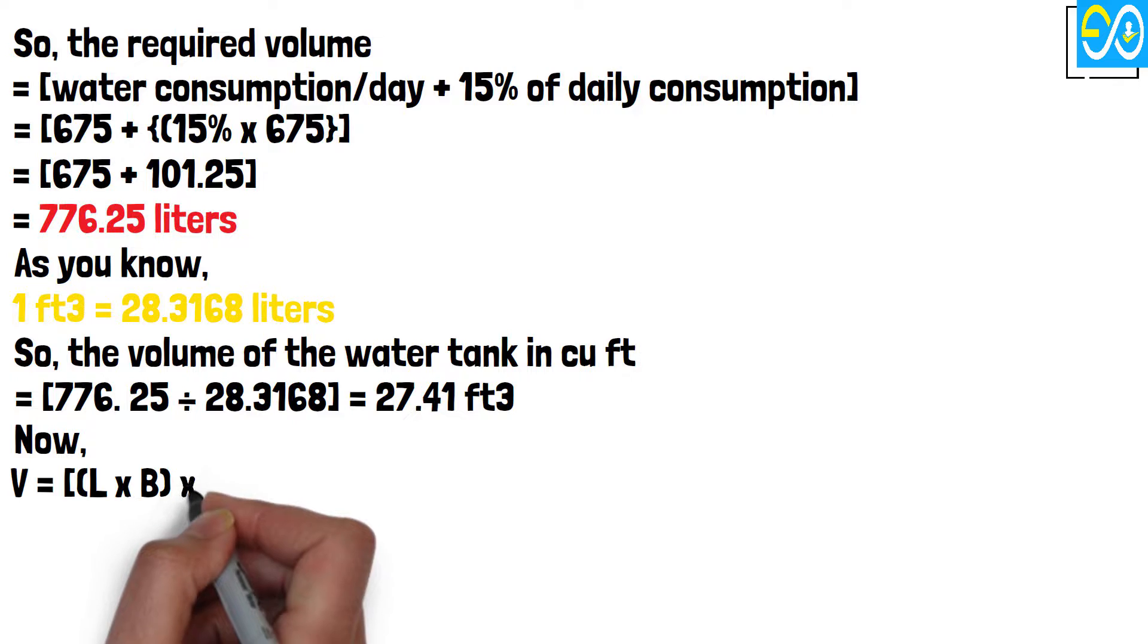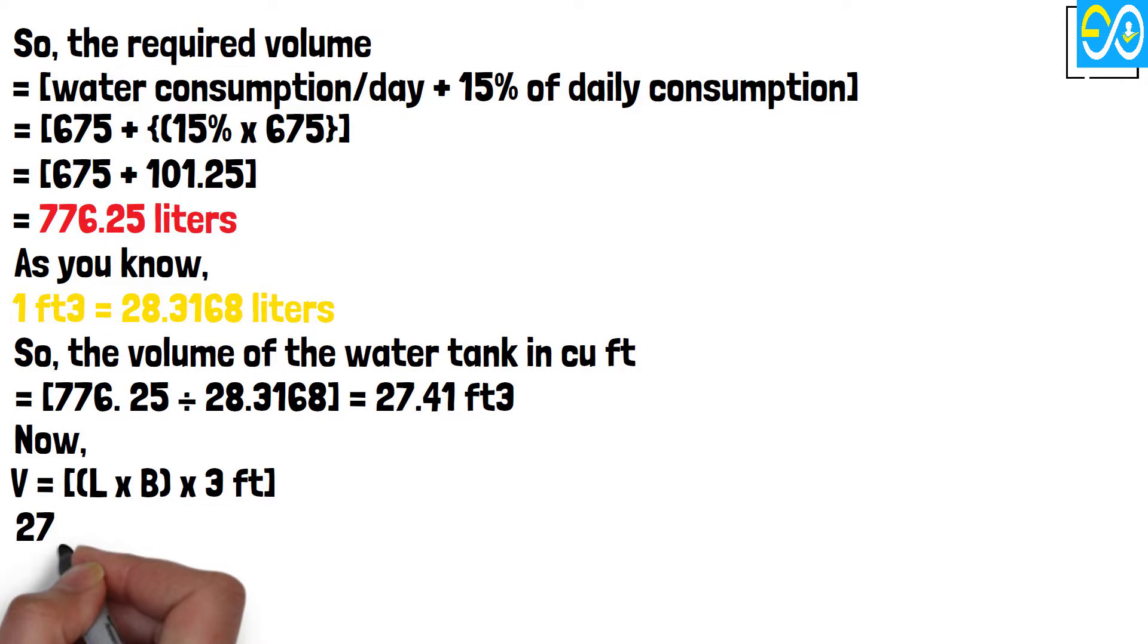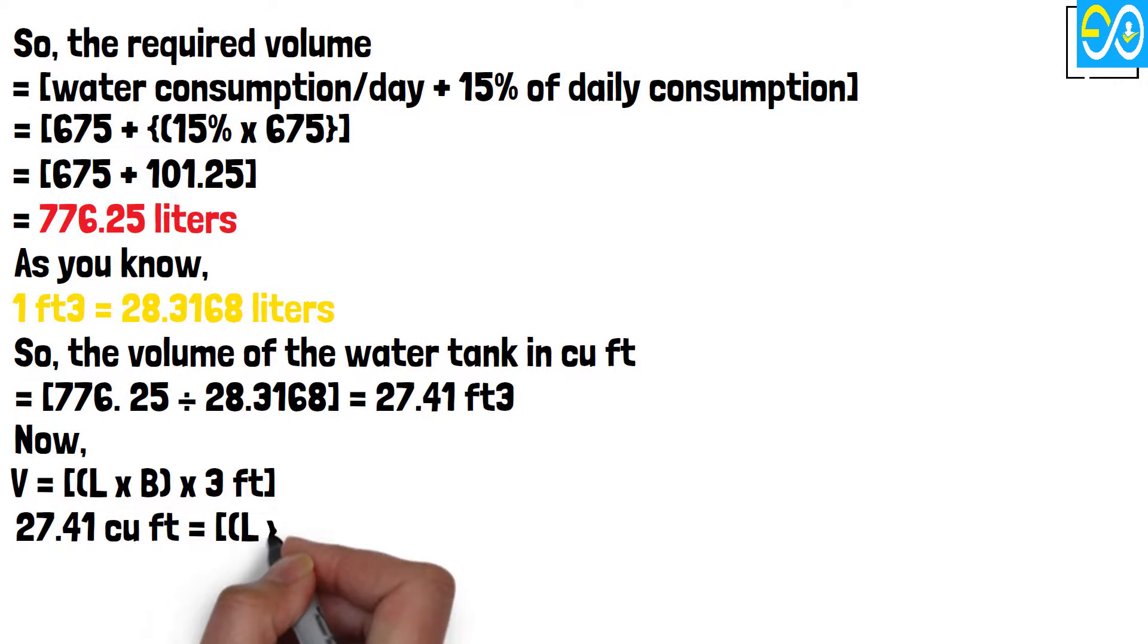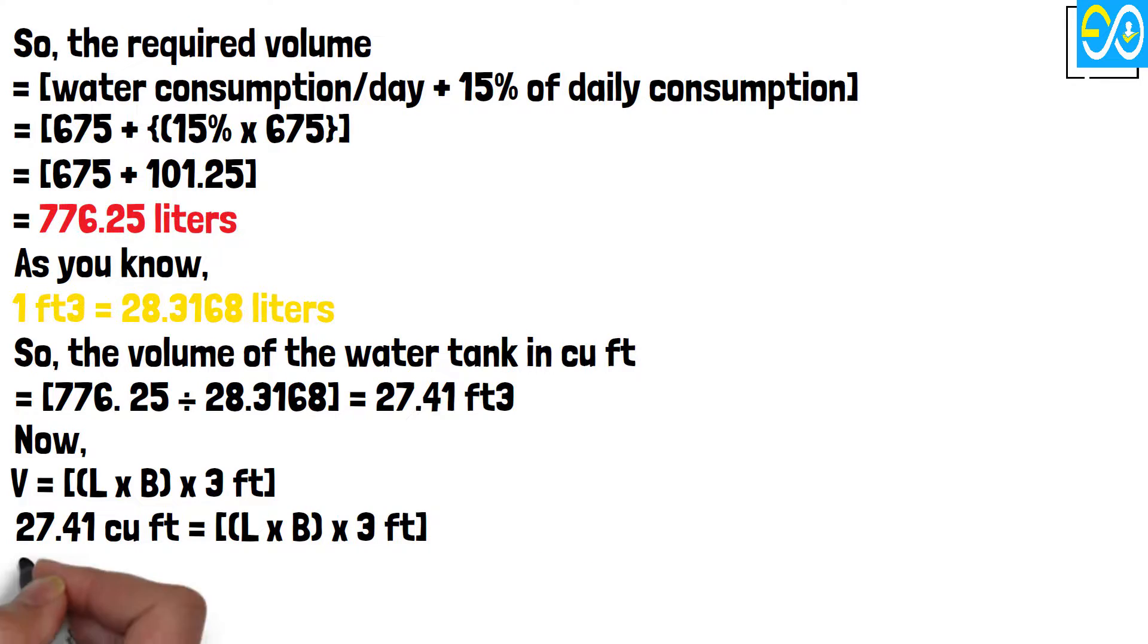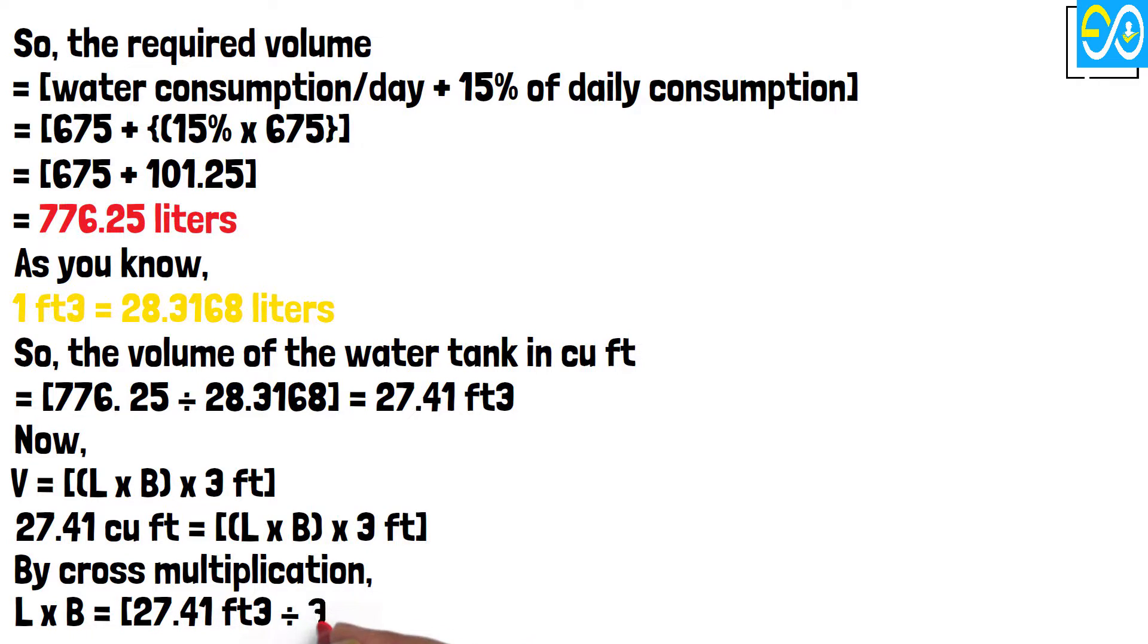Now, volume equals L times B times 3. 27.41 equals L times B times 3. By cross multiplication, L times B equals 27.41 divided by 3, equals 9.14 square feet.